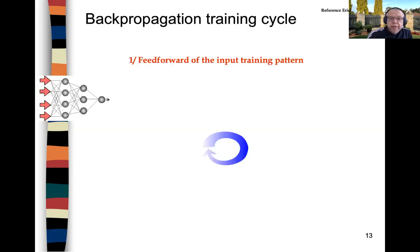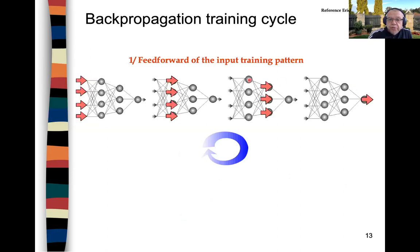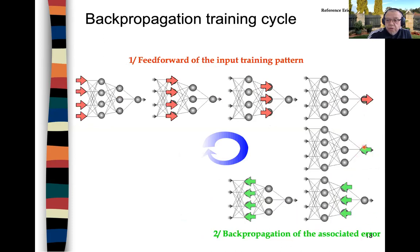The backpropagation cycle: first is the feedforward of the input training pattern. Your input is fed from the input layer to the hidden layer, to the second hidden layer, to the output layer, and then backpropagation of the associated error from the difference between the desired output and the actual output.